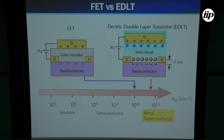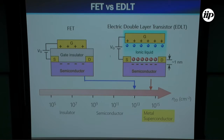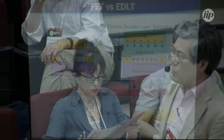Here is the structure of the devices we are using. I guess everybody knows what a field-effect transistor, FET, is. The semiconductor and gate sandwich the insulator, and by application of gate voltages, electrons are accumulated on top of the surfaces, giving a very nice two-dimensional electron system. However, with this transistor you are able to approach only up to 1×10¹³ carriers per square centimeter, which is not sufficient to induce superconductivity.